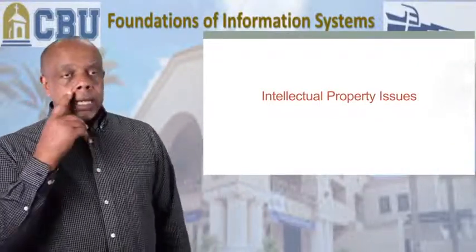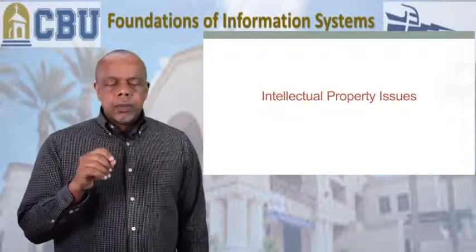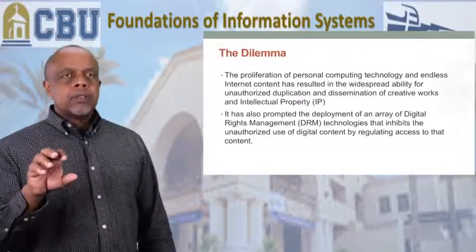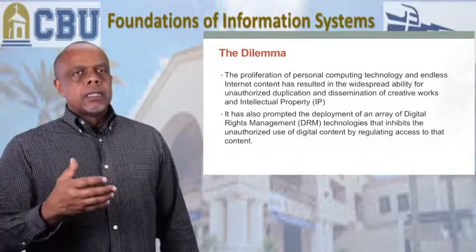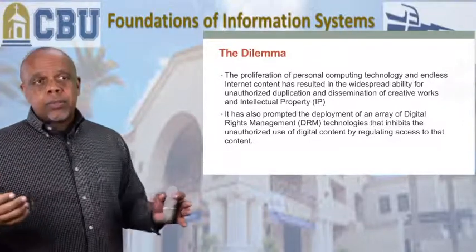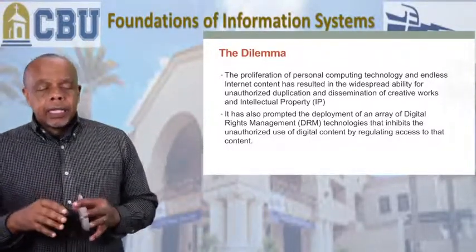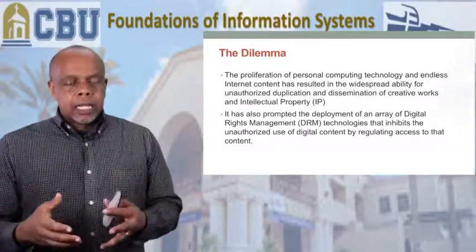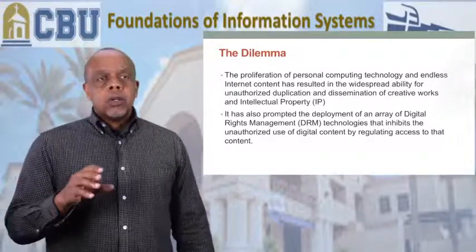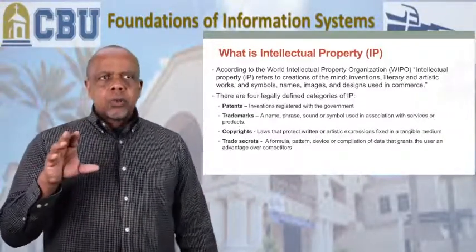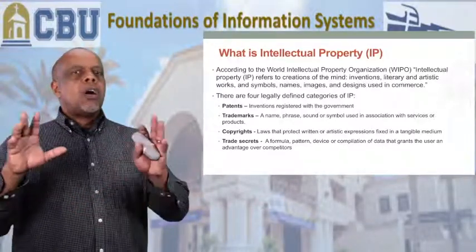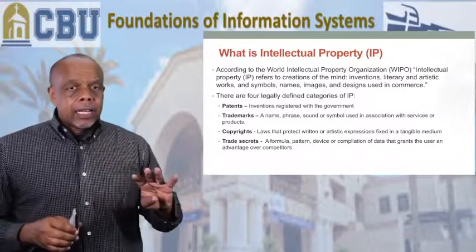Let's talk about intellectual property, because a lot of our personal information deals with intellectual property — knowledge that we own that we don't want to get out there. The digital age has brought about a widespread ability of unauthorized duplication and dissemination of creative works or intellectual property. That has prompted a lot of different technology and tools that companies are using to stop that, called DRM — digital rights management technology. Intellectual property refers to creations of the mind: inventions, literary and artistic works, symbols, names, images. The four categories of intellectual property are patents, trademarks, copyrights, and trade secrets.